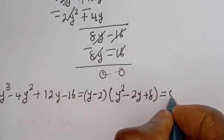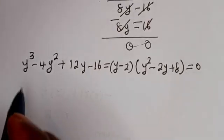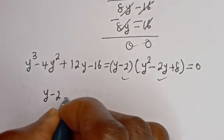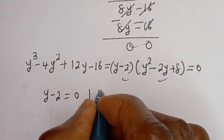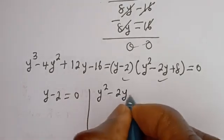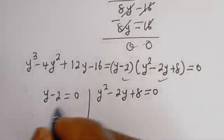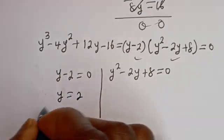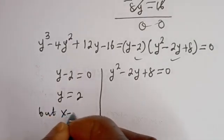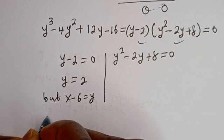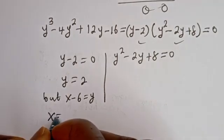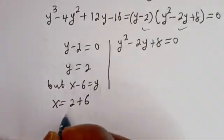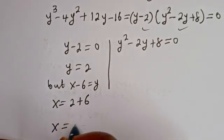So y squared minus 2y plus 8 equals 0, and the first factor gives y minus 2 equals 0, so y equals 2. Since x minus 6 equals y, x equals 2 plus 6, therefore x equals 8.